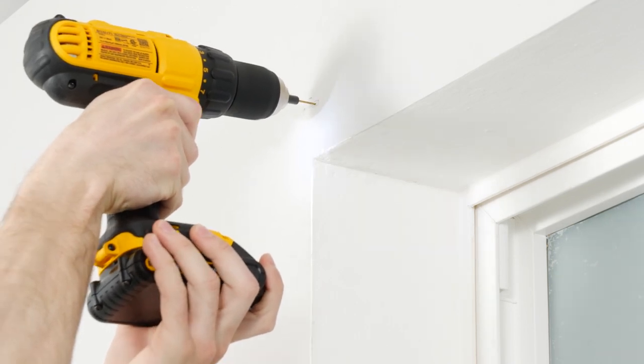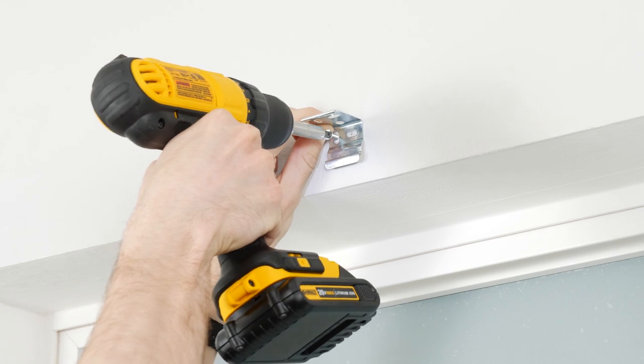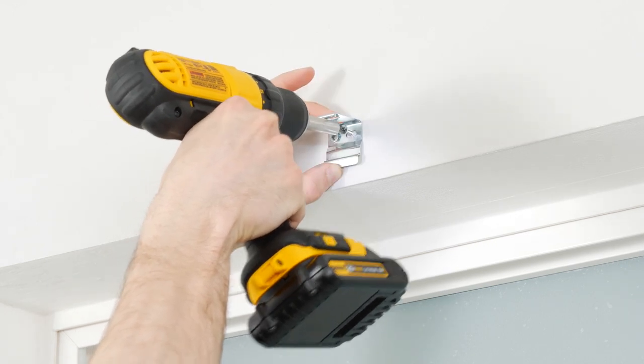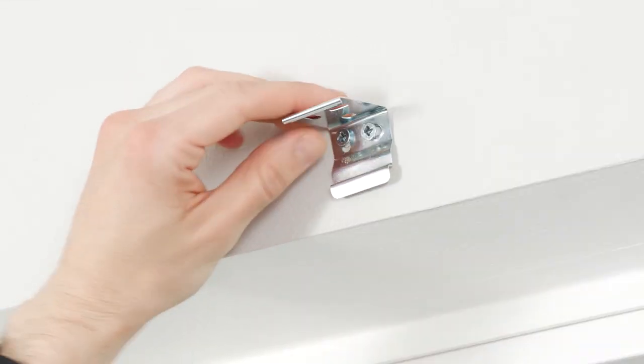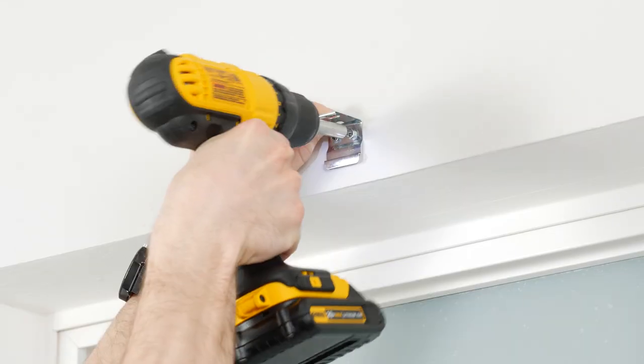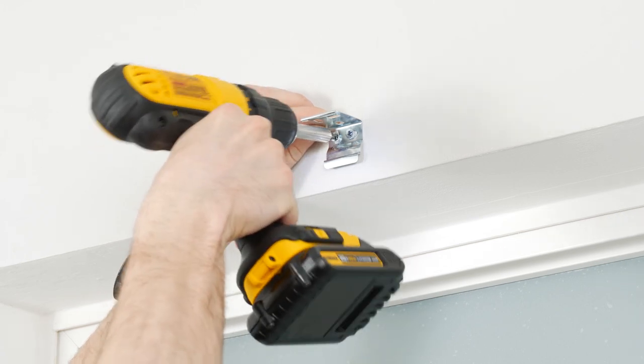Before drilling in the screws, it's a good idea to pre-drill the holes to make it easier to put them in. Place the bracket over the holes and drill the screws in. You may want to screw them in loosely to allow for small adjustments. Once the brackets are lined up, finish drilling the screws in all the way.